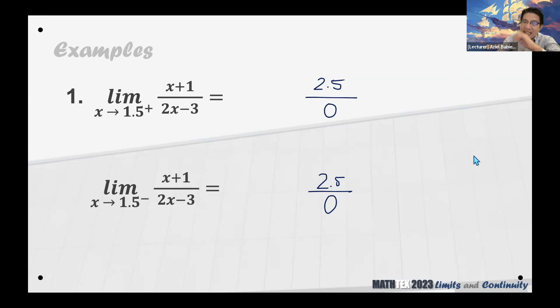Okay, sige, let's do this. So ang tanong na lamang natin, paano tayo nag-approach from the positive side or from the negative? Ang gagawin natin, you look at the values. Tingnan nyo rito, 1.5 from the positive, meaning we are approaching 1.5 from values that are greater than 1.5.